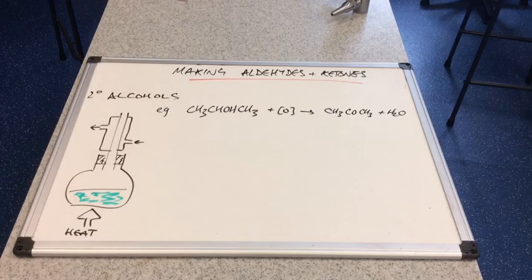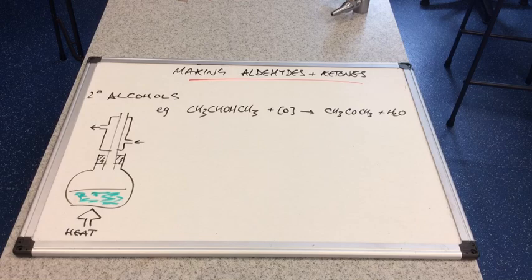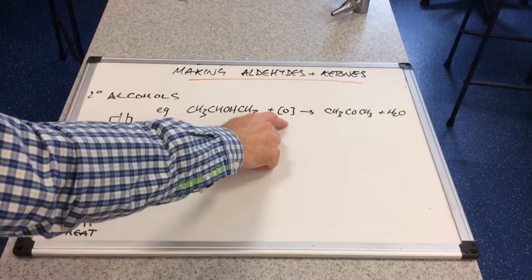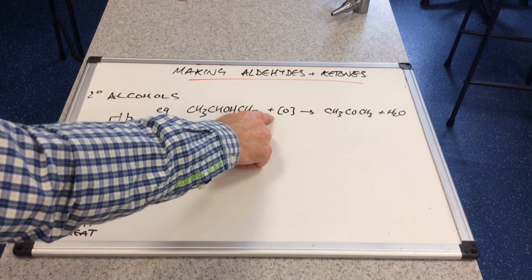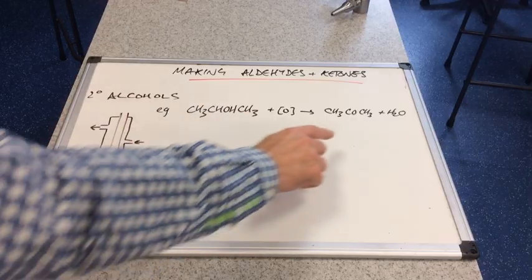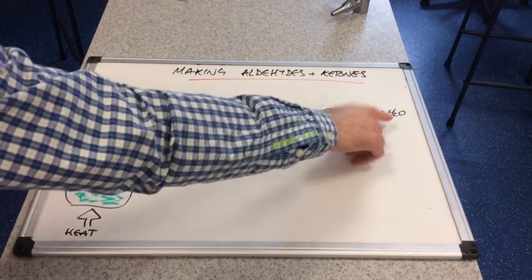And there's the equation. So I've chose propan-2-ol, just so it ties in nicely with the propan-1-ol we use for the primary alcohol example. So propan-2-ol with the oxidizing agent, only one oxidation possible even with reflux. So we just need one mole of oxidizing agent. So we're going to make propanone and water.